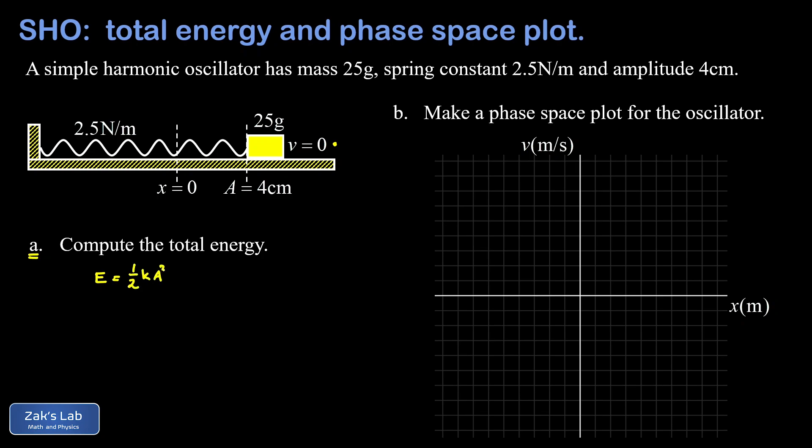In other words, when x is equal to a, the kinetic energy is zero and our energy reduces to just spring potential. We substitute our spring constant and our amplitude in SI base units, and when I run the numbers to three significant digits, I find a total energy of 0.002 joules.